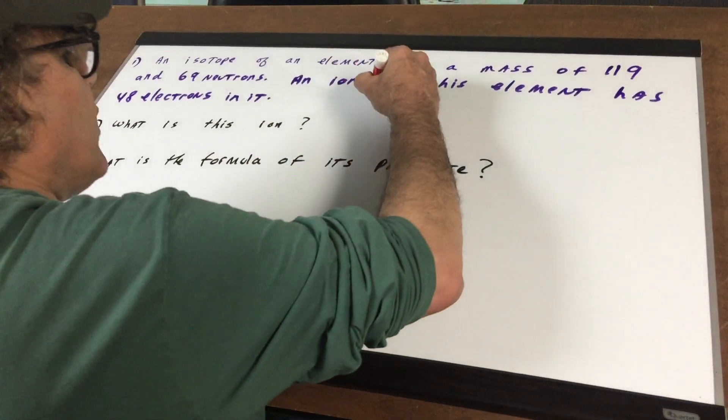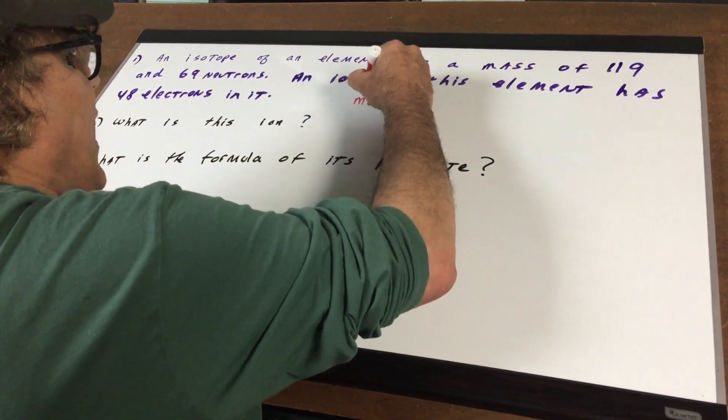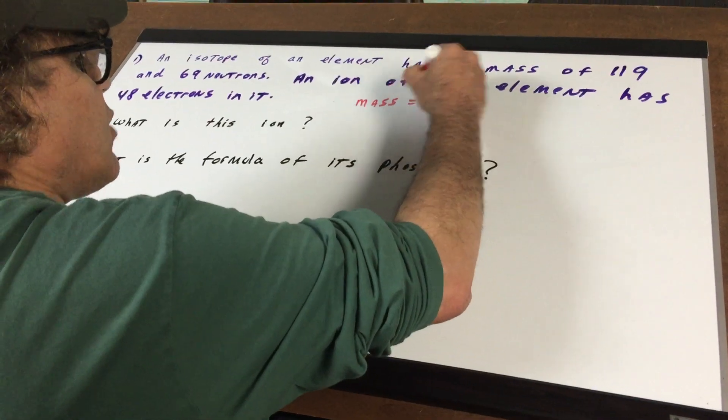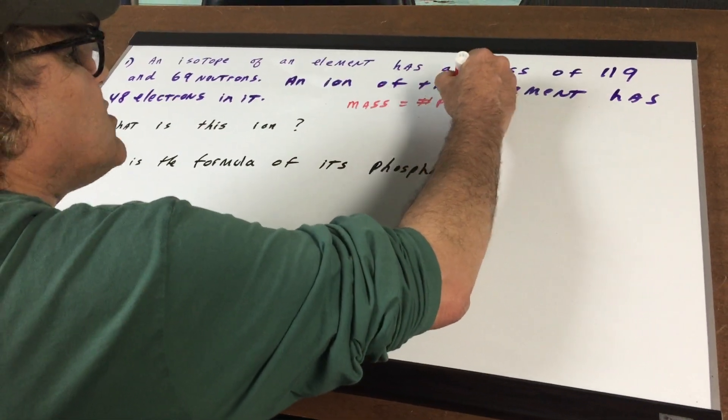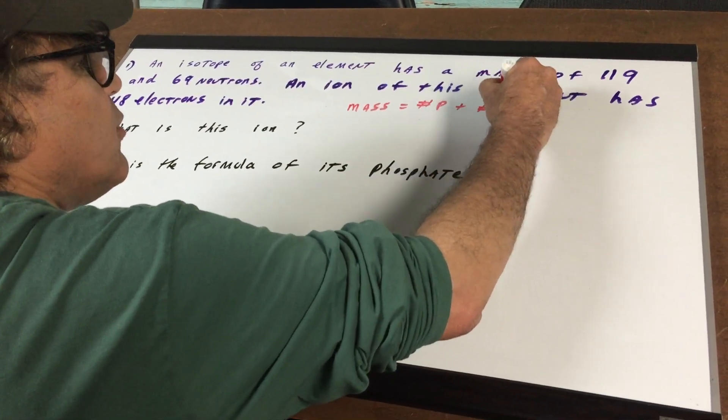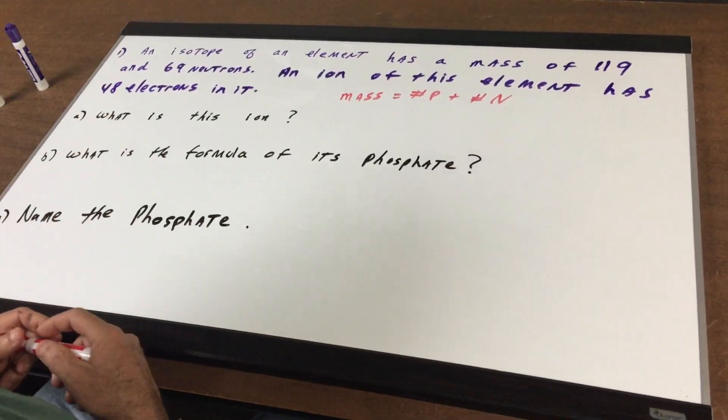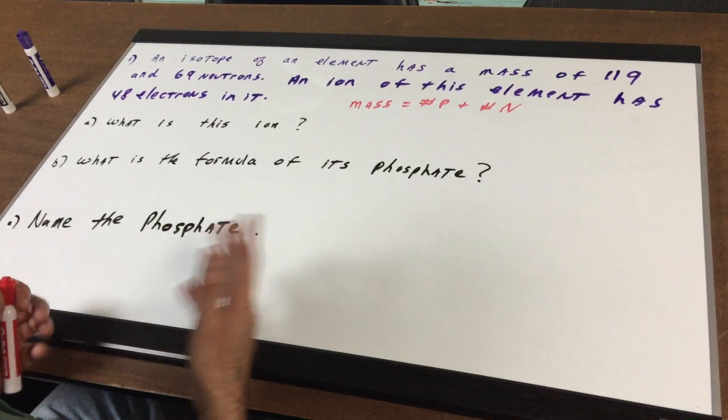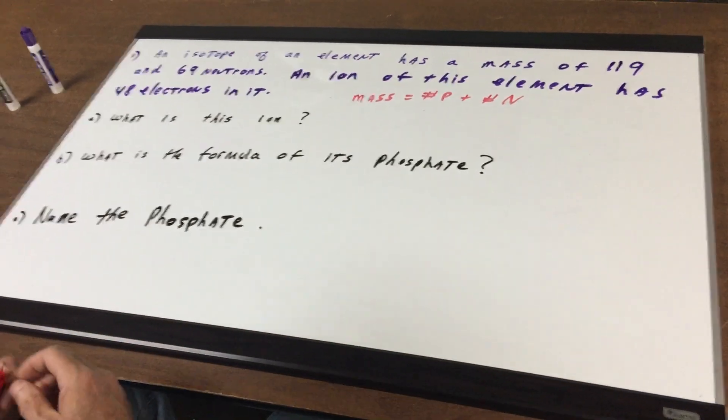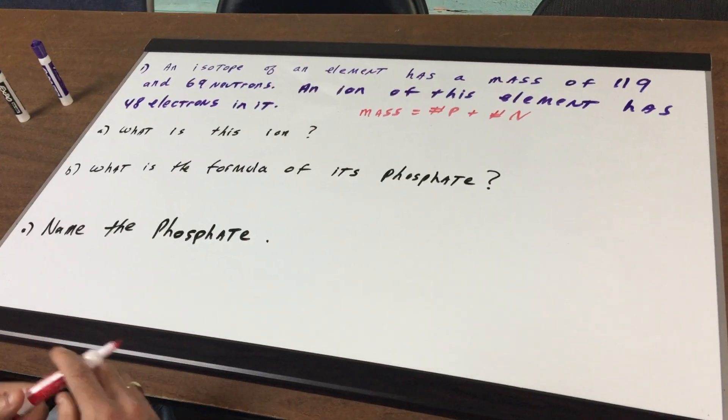The first thing I'm going to do is say that the mass of anything equals the number of protons plus the number of neutrons. With this hint if you want to stop this tape and try to work these out, be my guest. I recommend you to do that.